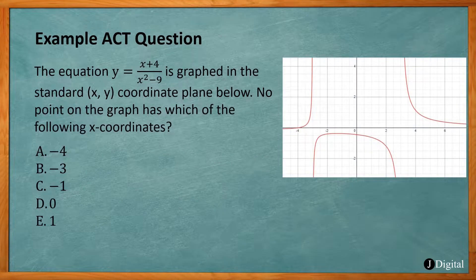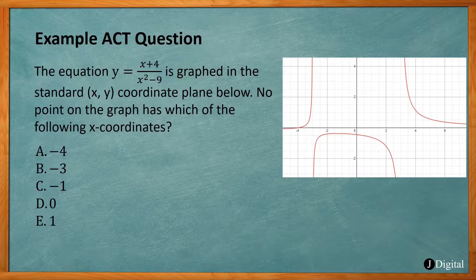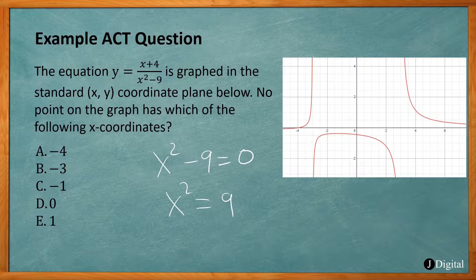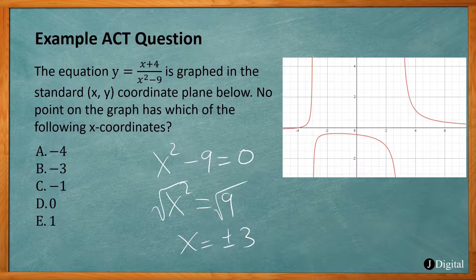In this example ACT question, the equation y = (x + 4) / (x² - 9) is graphed in the standard xy coordinate plane. No point on the graph has which of the following x coordinates? We look at what's not in our domain — when the denominator equals 0: x² - 9 = 0, add 9 to both sides, x² = 9, take the square root, x = ±3. Only one of those values appears in the answer choices — x = -3. The denominator being 0 means those x values won't be part of the domain.